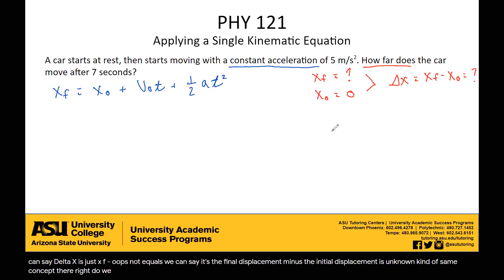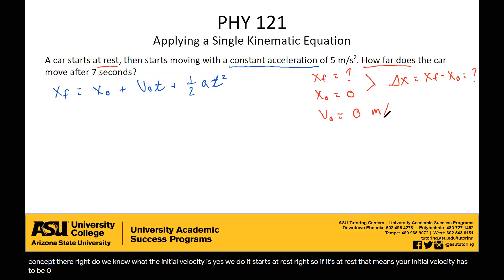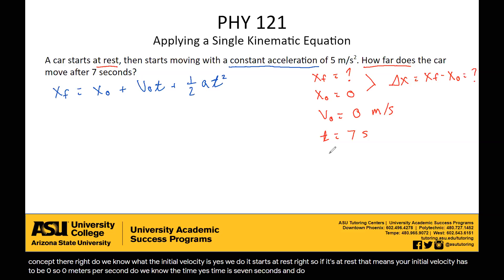Do we know the initial velocity? Yes — it starts at rest, so the initial velocity is zero meters per second. Do we know the time? Yes, time is seven seconds. And do we know the acceleration? Yes, it's five meters per second squared.